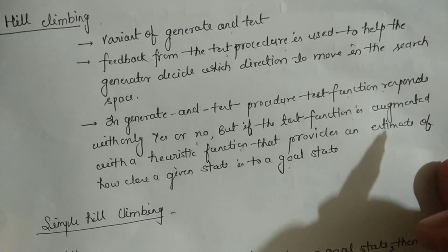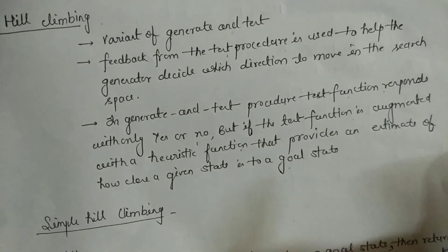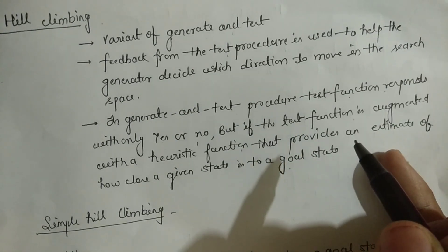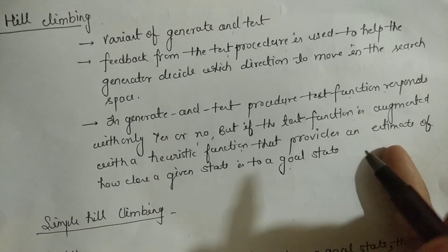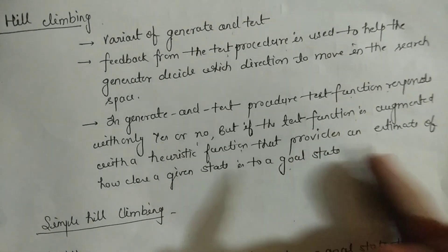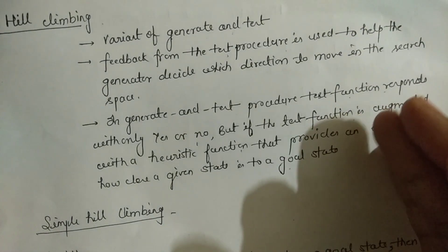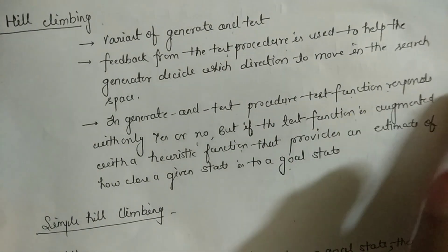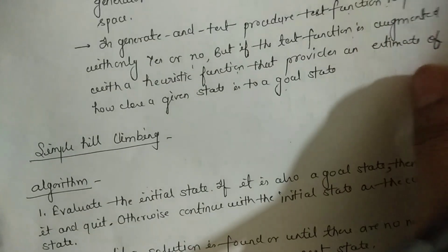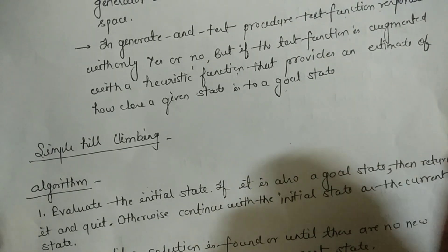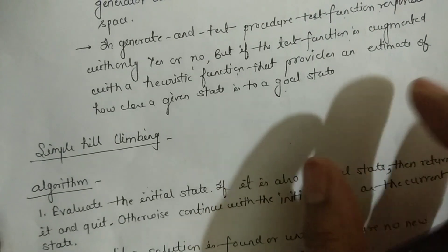So basically, Generate and Test is the way that you use feedback — you use feedback so that you can move in the direction of the next step. The test function answers whether the next step is the goal state, choosing the state most close to the goal. This is the Hill Climbing Algorithm.